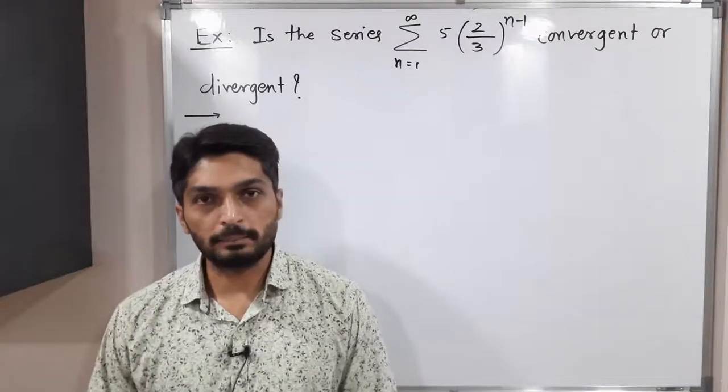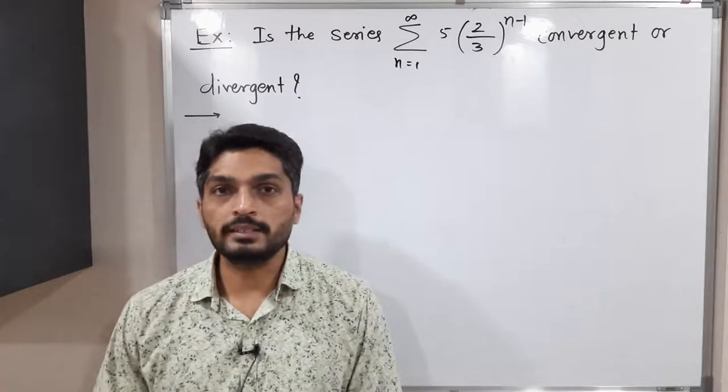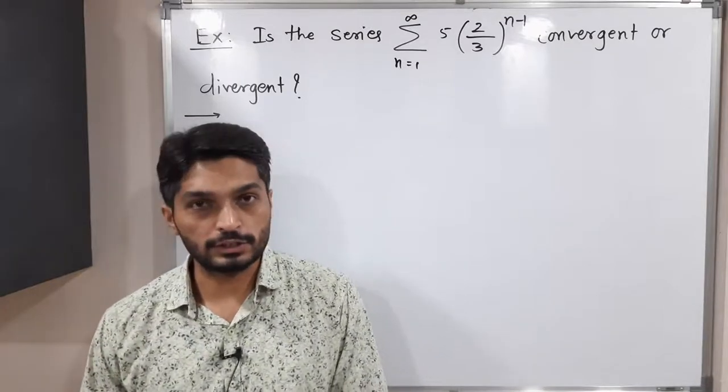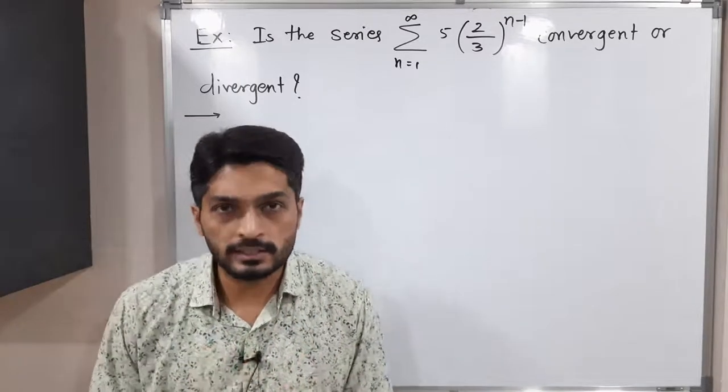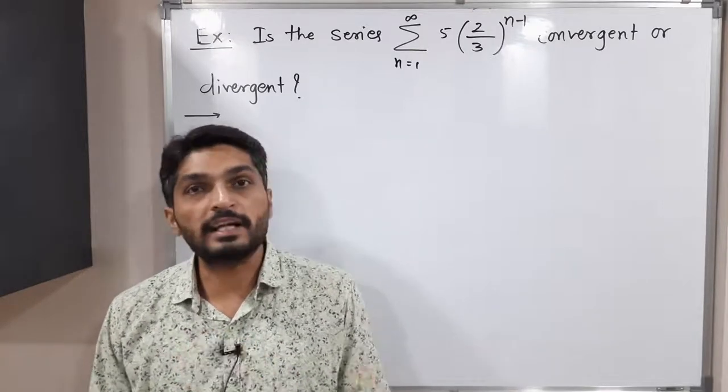Hi everyone, let us discuss this example. In this example, we have this series and we have to decide whether the series is convergent or divergent. Just by observing this series, it is difficult to decide if it is convergent or divergent. So what will I do? I will expand this series.